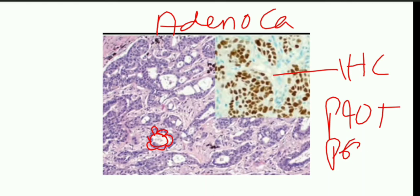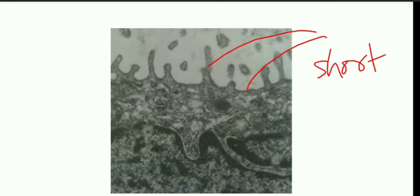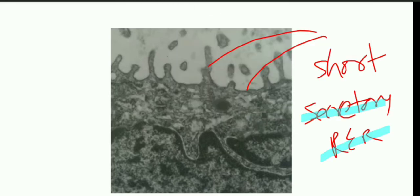In the next picture you can see electron microscopy showing the microvilli - they are short microvilli. You should remember that short microvilli and secretory rough endoplasmic reticulum is related with adenocarcinoma.